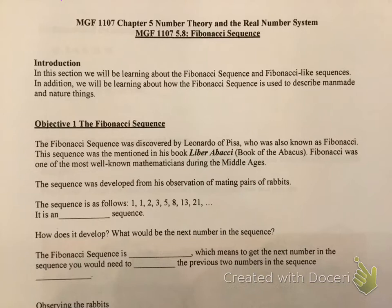He wrote a book called Liber Abaci, which is the book of the abacus. The abacus, if you know what that is, is a tool that they used to use to add, subtract, multiply, and divide — so it was like the predecessor of a calculator.